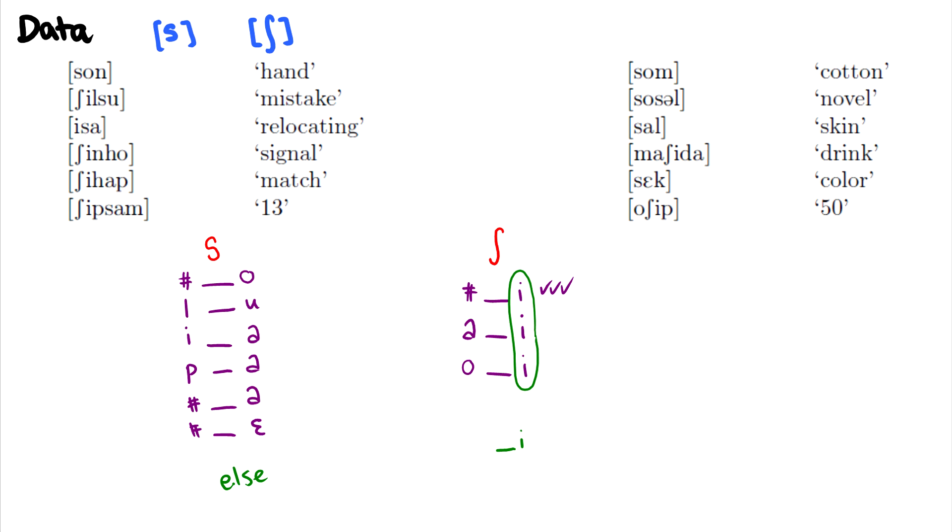So for instance, if I was comparing something like sh and k, these are unlikely to be allophones, even if there aren't any overlapping environments, simply because the properties of the sounds are so different.